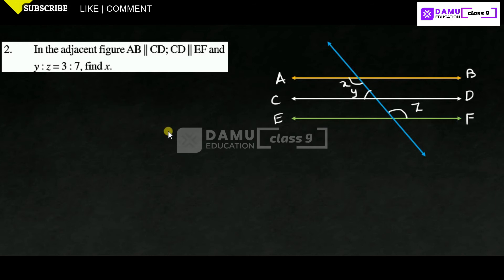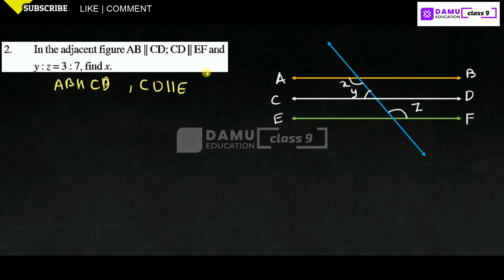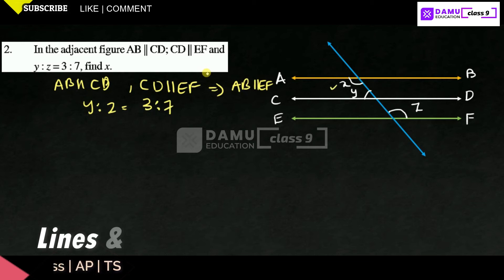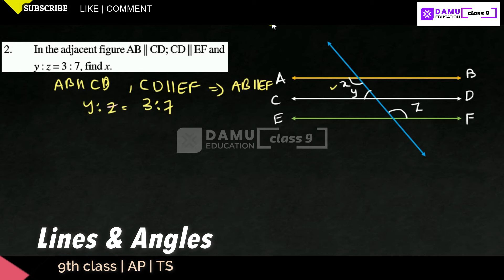In the second question, from the adjacent figure, AB is parallel to CD and CD is parallel to EF. Since AB ∥ CD ∥ EF, we can say AB is parallel to EF. The ratio of y to z is 3:7, and we have to find the value of x.